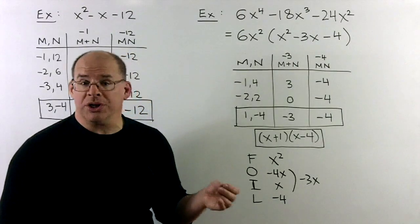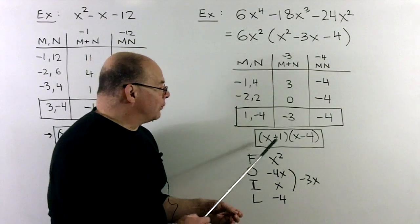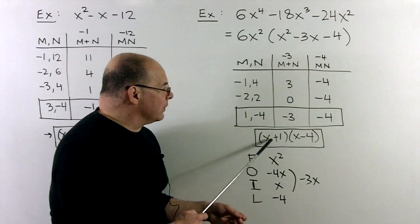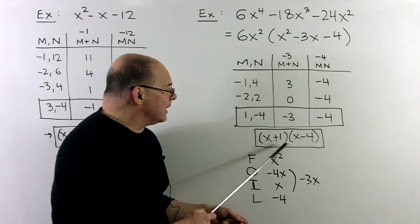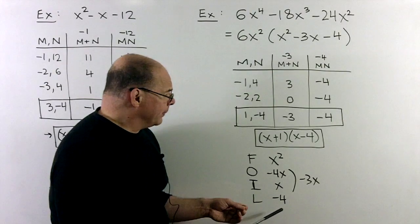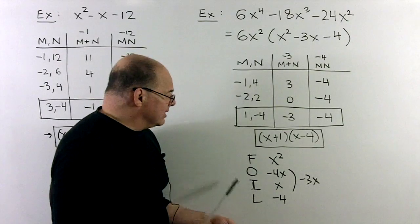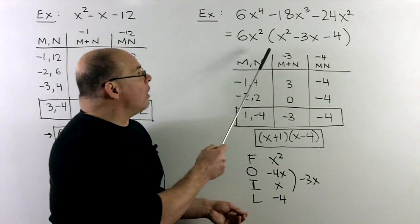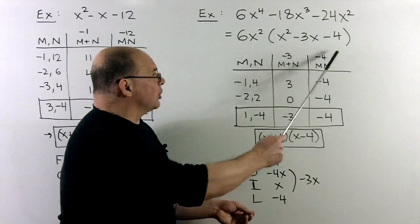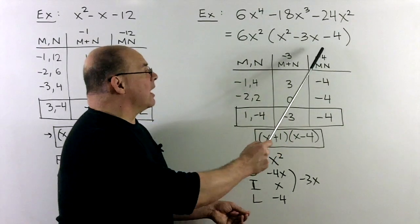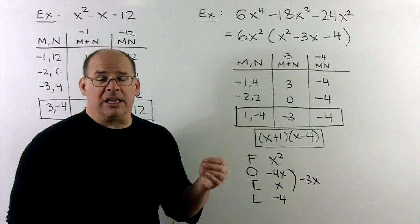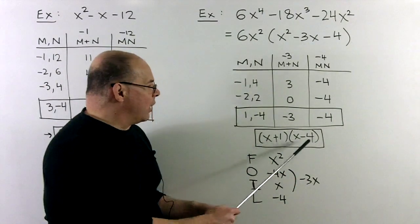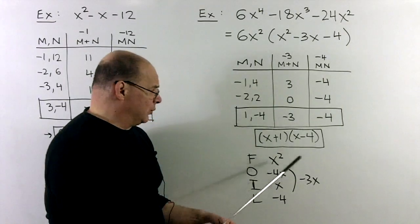We'll FOIL to check: first gives x squared, outside minus 4x, inside x, last minus 4. Adding inside and outside gives minus 3x, and we have all the parts of the answer. If we were technically factoring all the way, we'd put 6x squared out in front of these two factors.